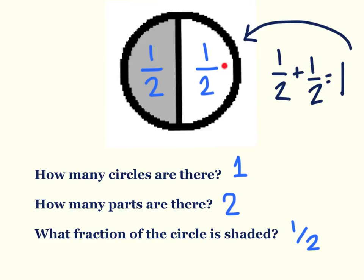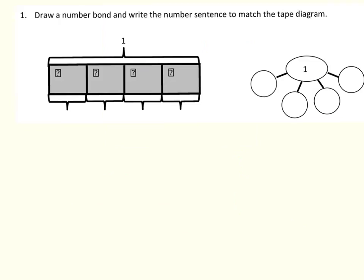This problem is very similar to the problems we just did, except we're going to use a number bond and a number sentence to represent the parts and the whole. First, what do we need to do? We need to figure out our whole. If we look at the number sentence, we see a one — so one is our whole. Now if we look at the number bond, we should see the same thing: one is our whole.